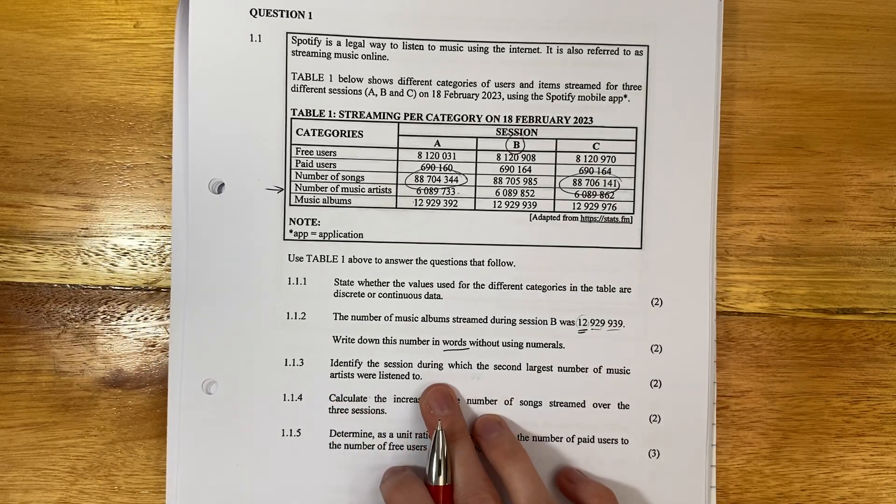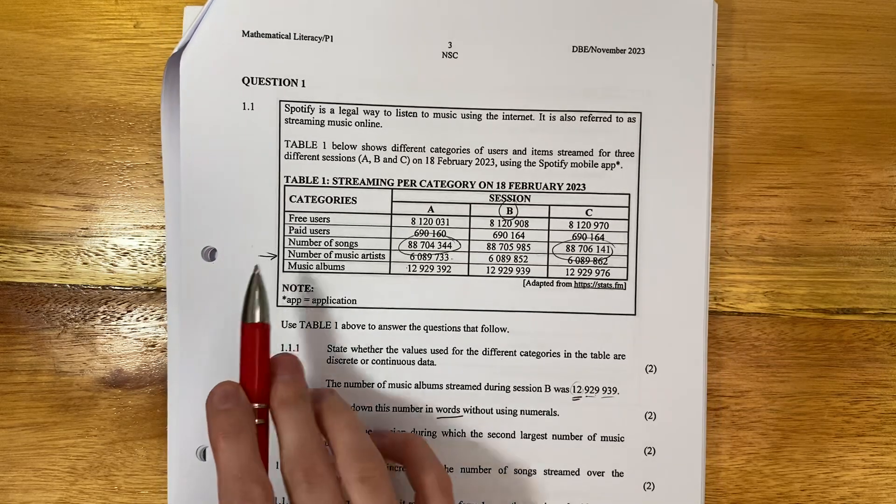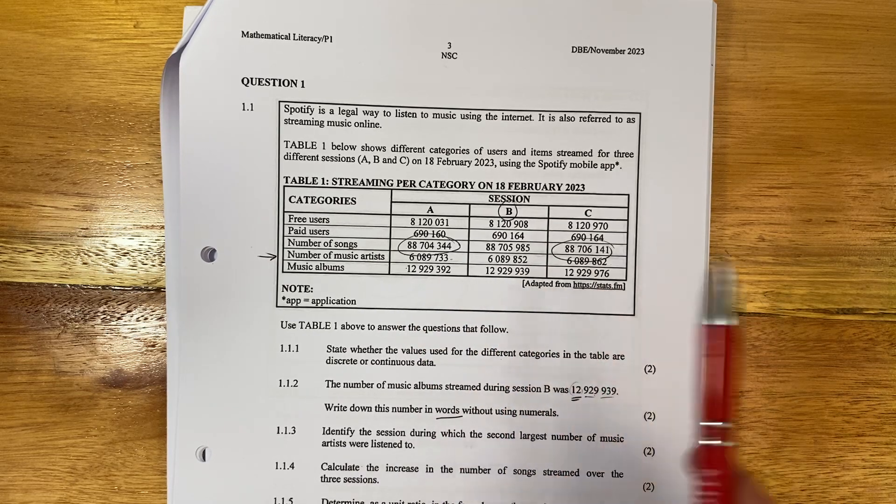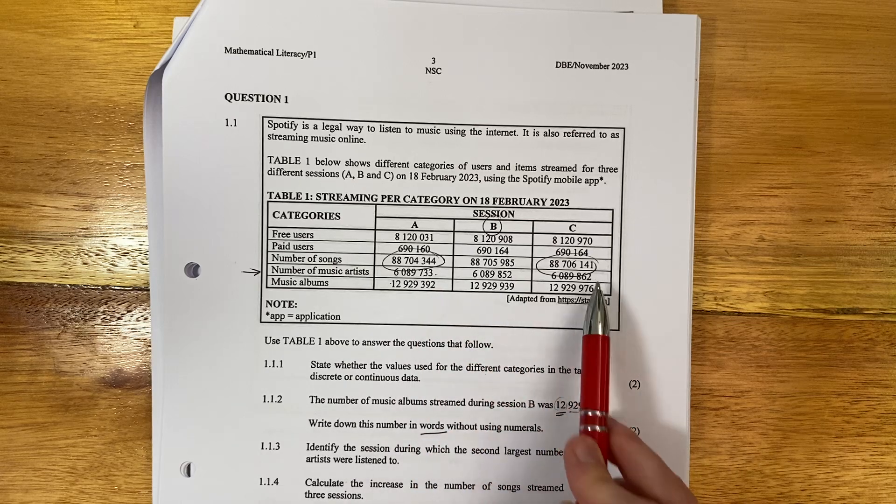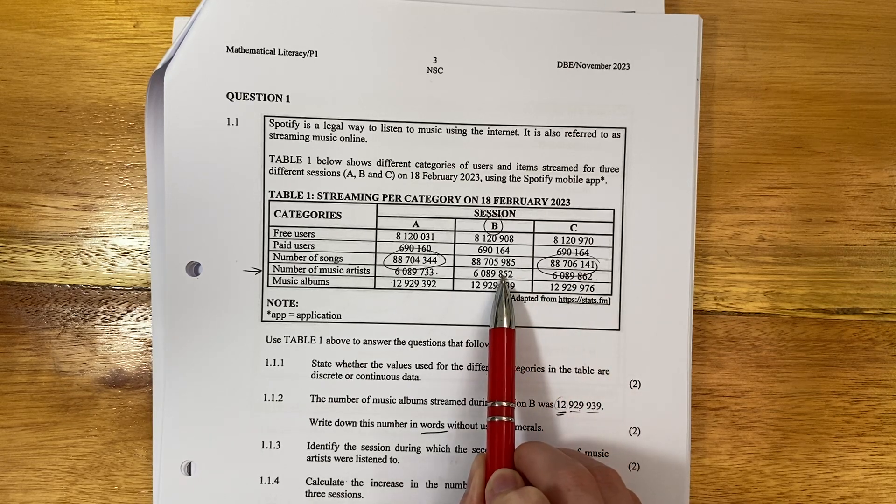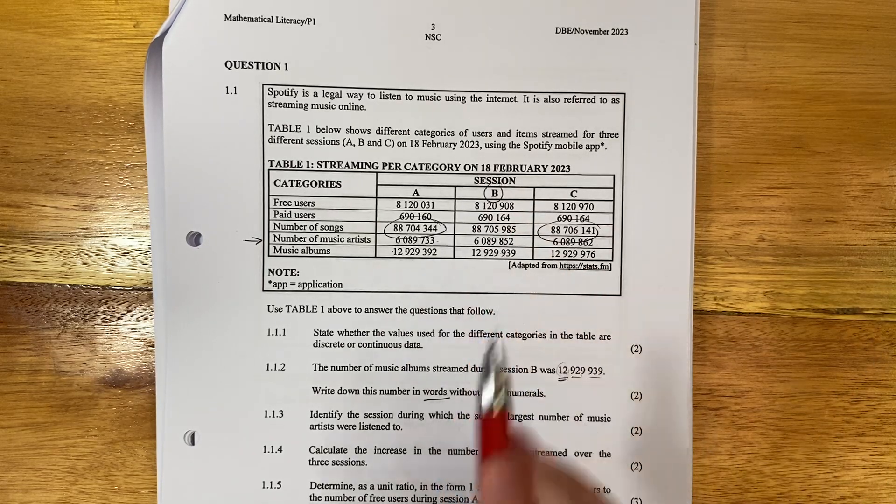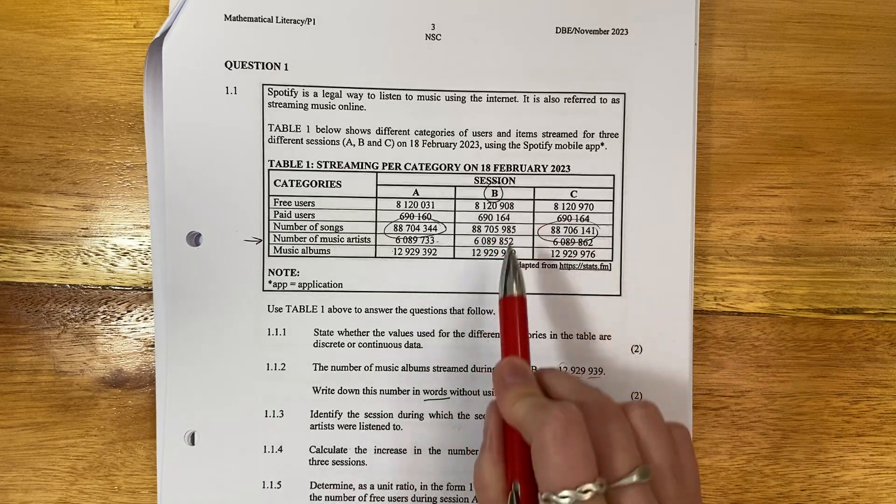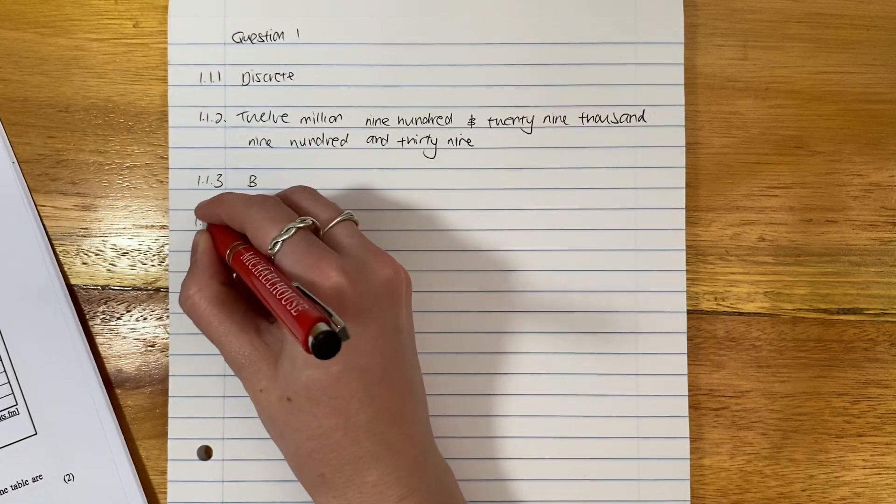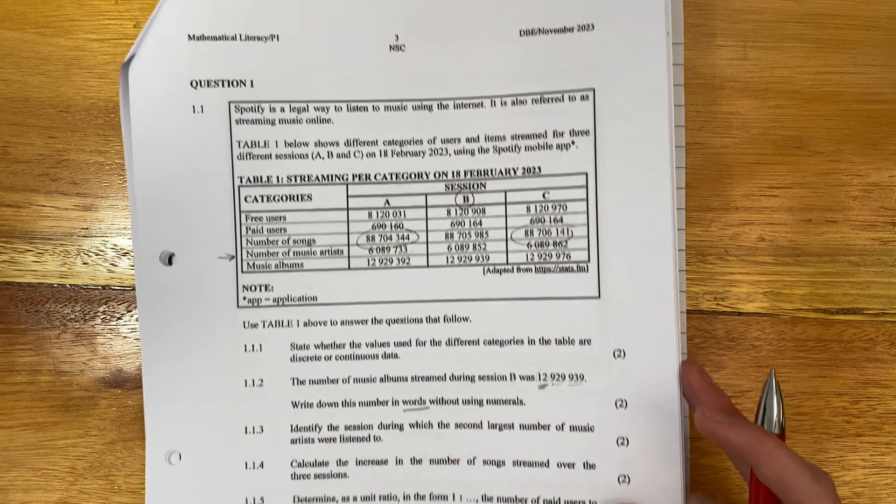Let's move on to the next one. The next one says, identify the session during which the second largest number of music artists were listened to. So we're looking at artists. So we're over here. We have 6089, so they all start at 6089. So we're only looking at the last three numbers of each. We can see that that's the smallest, that's the largest, and that's the second largest, or the middle number. The question asks for the second largest. So the second largest, we don't have to write the number. We just have to write the session. So what is it? Session B. You see what students do here is they don't read. And so then they write, for example, they'll write the number. And it's like, well, no, that wasn't what was asked for. What was asked for was the session. So just be careful.